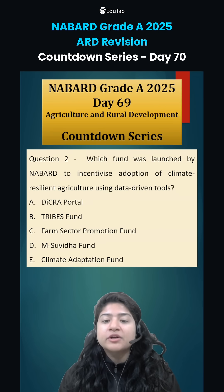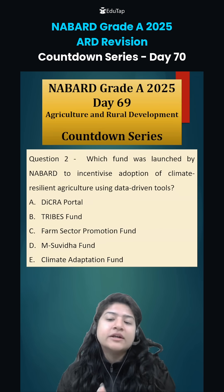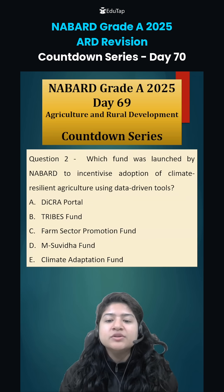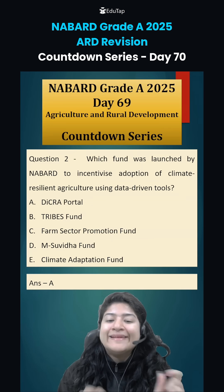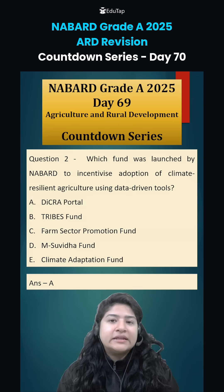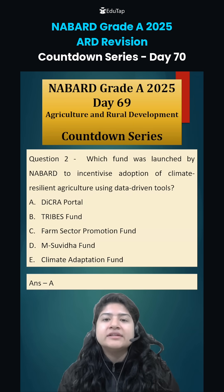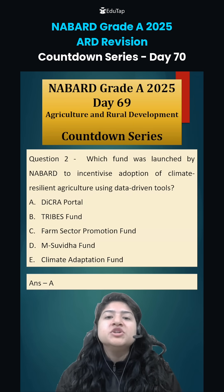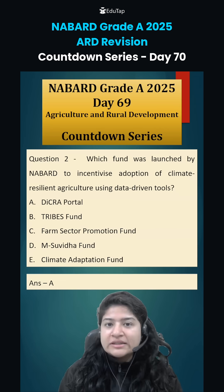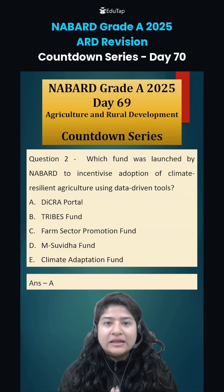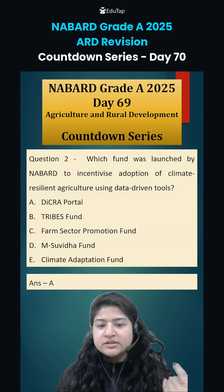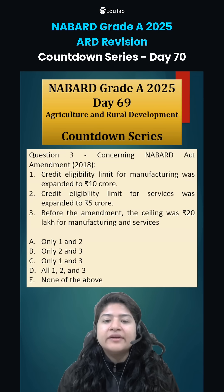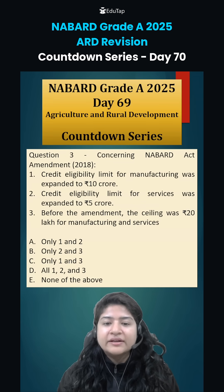The next question from the NABARD annual report: which fund was launched by NABARD to incentivize adoption of climate-resilient agriculture using data-driven tools? The answer is option A — the DiCRA (Data in Climate Resilient Agriculture) portal. It is a platform where geotagging and geospatial tools help with better analysis and preparation of future programs.